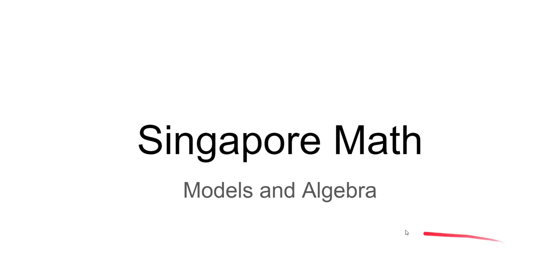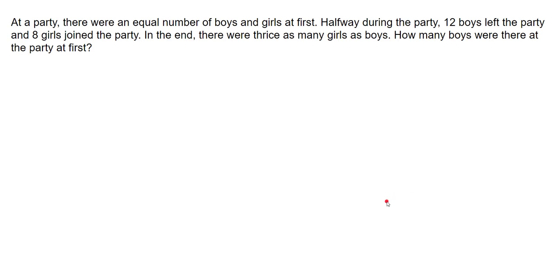Hi everyone, today we are going to solve a word problem using Singapore math models and also solve the problem using algebra. At a party there were an equal number of boys and girls at first. Halfway during the party, 12 boys left and 8 girls joined. In the end, there were thrice as many girls as boys — meaning the number of girls was three times the number of boys at the end of the party.